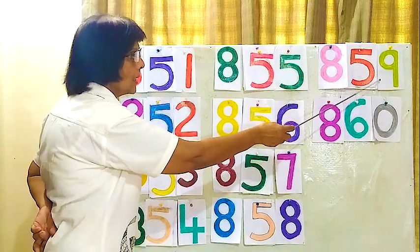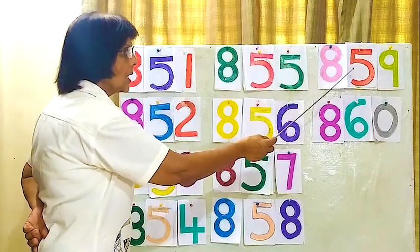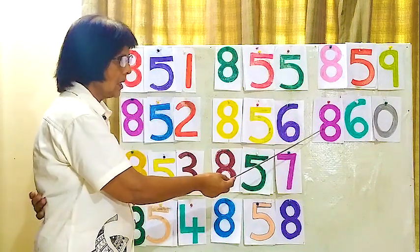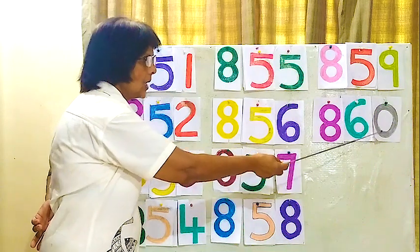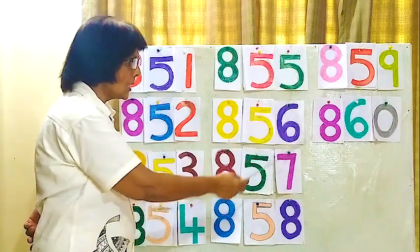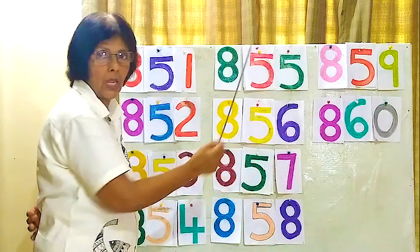Now this one, 859. 859, 859. Last number, 860. 860, 860, 860, 860.